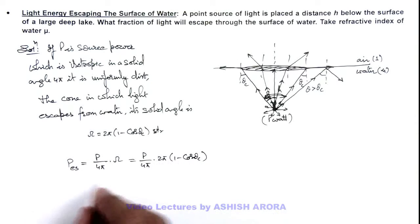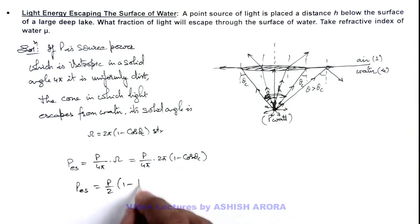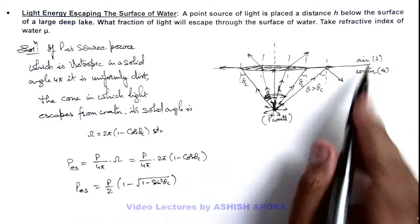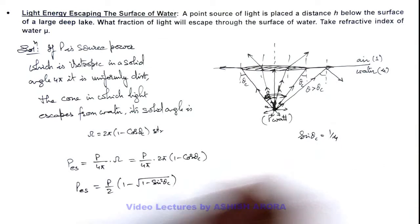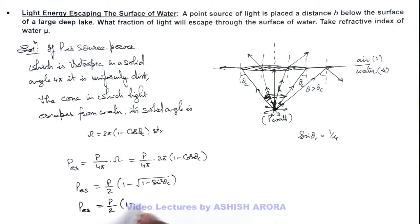Here we can further write the escaping power is equal to P by 2 times (1 - cos θc). We can write cos θc as root of (1 - sin²θc). And as outside medium is air, sine θc we can write as 1 by μ. So on substituting, the escaping light energy is given as P by 2 times (1 - √(1 - 1/μ²)).